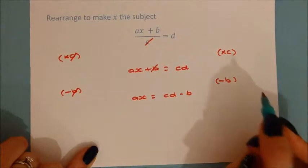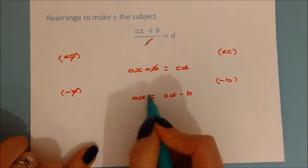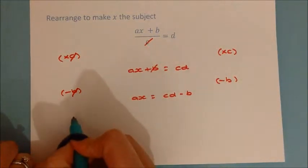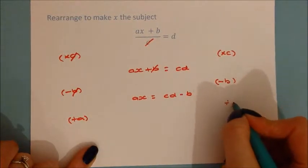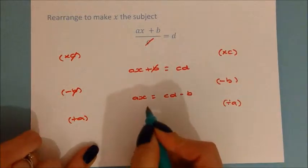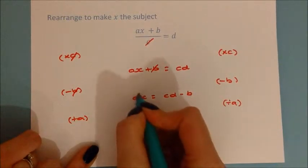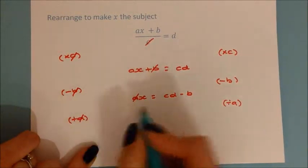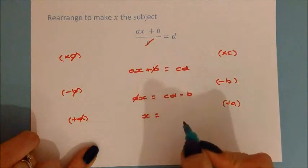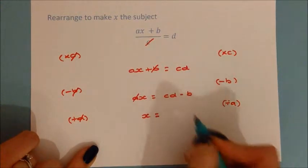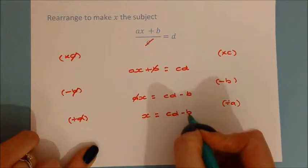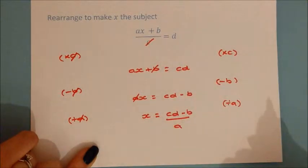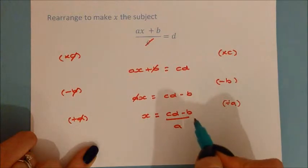The last step is to get x on its own — it's been multiplied by a, so we divide both sides by a. This cancels, leaving x equals cd minus b, all divided by a. That's the final answer: x the subject of the formula.